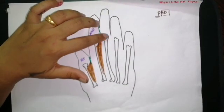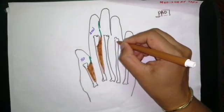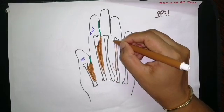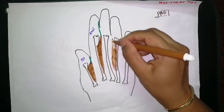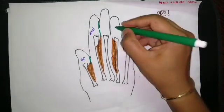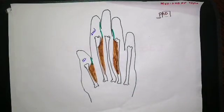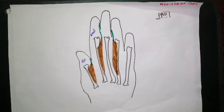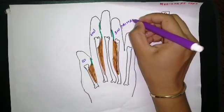Since there is no adduction movement of the central finger, no Palmar Interosseus originates from the third metacarpal. The third Palmar Interosseus originates from the lateral aspect of the base of the fourth metacarpal. Its tendon gets inserted into the dorsum of the base of the distal phalanx of the ring finger via the dorsal digital expansion.